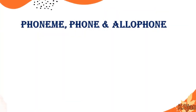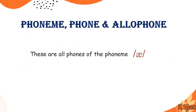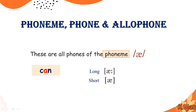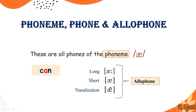I'm going to make it very clear the difference between phoneme, phone, and allophone. These are all phones of the same phoneme. The phoneme is /a/, and we usually find these brackets for phoneme symbols. For example, in the word 'can', we find a vowel phoneme /a/. The long, short, or nasalized variations are all known as allophones of the phoneme /a/. These individual occurrences of sounds are known as phones in English.